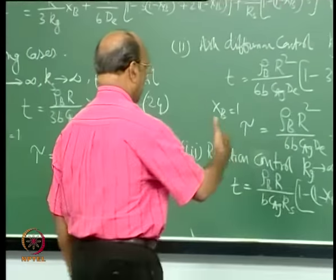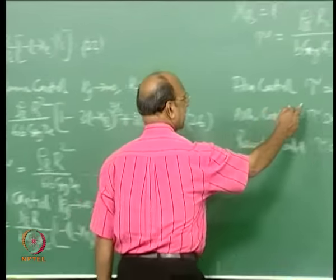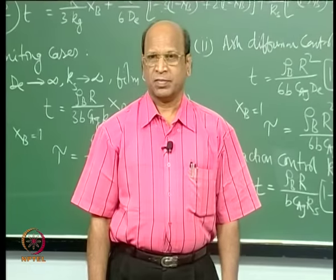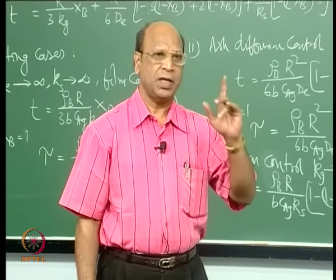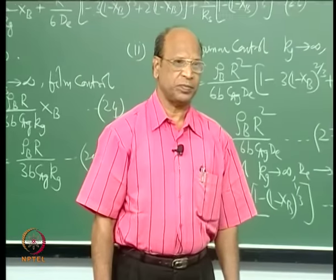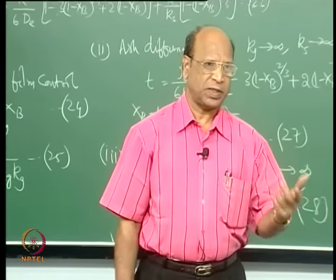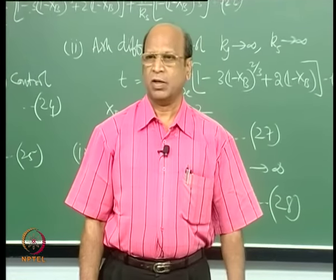One way of doing this is to find out which step is controlling — this is one of the simplest tests. How do I experimentally find out whether film control, ash control, or reaction control is controlling the rate? I take particles of different sizes and establish a relationship.